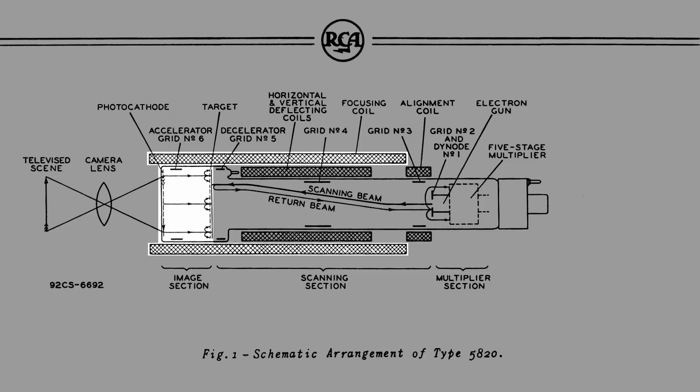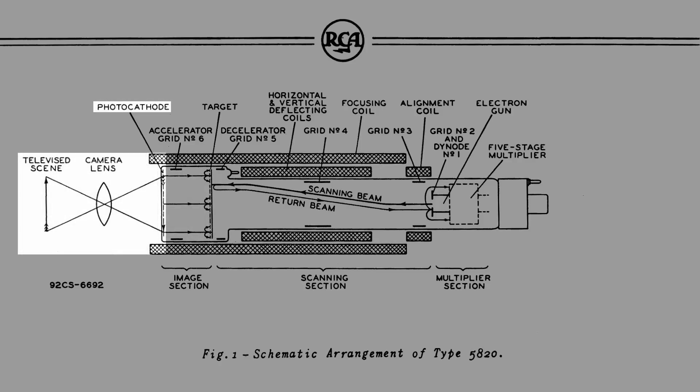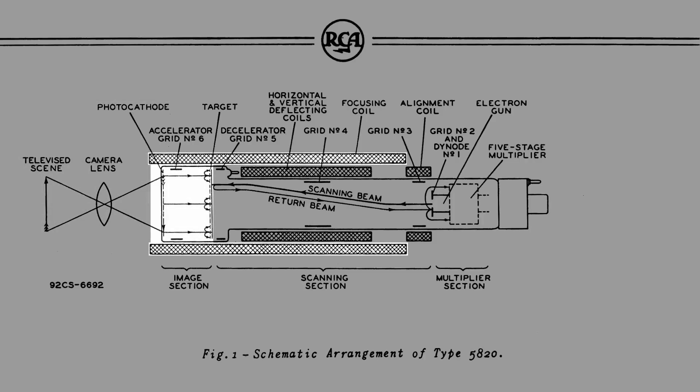Focusing is accomplished by means of a magnetic field produced by an external coil and by varying the photocathode voltage. Light from the scene being televised is picked up by an optical lens system and focused on the photocathode, which emits electrons from each illuminated area in proportion to the intensity of the light striking the area. The streams of electrons are focused on the target by the magnetic and accelerating fields.